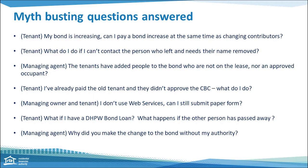From a managing agent's point of view: the tenants have added people to the bond who are not on the lease nor are they an approved occupant. It's important to remember that changing the bond contributors only alters whose name is listed on the bond with the RTA — it is not the same as getting approval to change the tenants listed on the tenancy agreement, and it does not change parties' obligations to the lease. We encourage agents to talk to their tenants directly to get a better understanding of the situation.